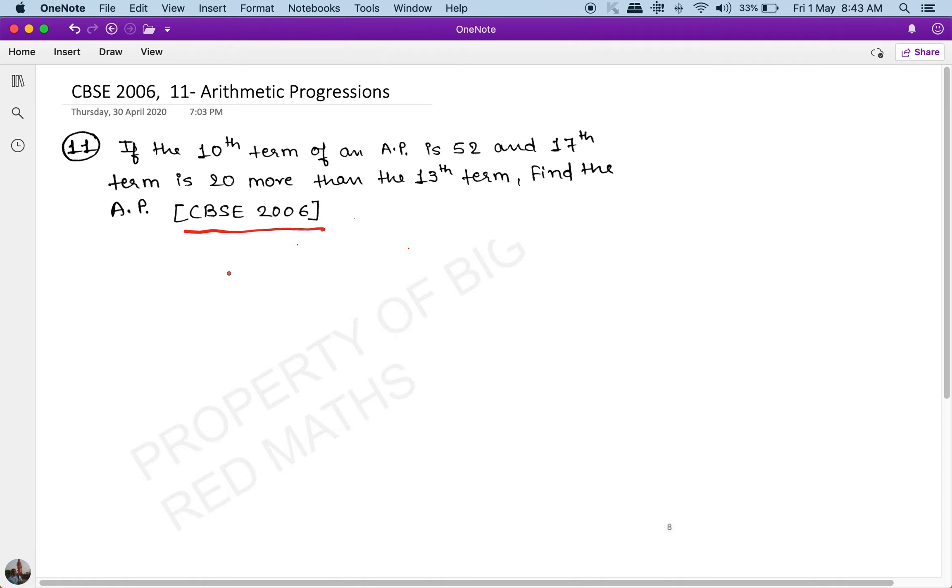This is important. You should learn how to solve this pattern of questions in arithmetic progressions. The question is very simple. It's all about converting basic English into equations. The question says: If the 10th term of an AP is 52 and the 17th term is 20 more than the 13th term, find the AP.